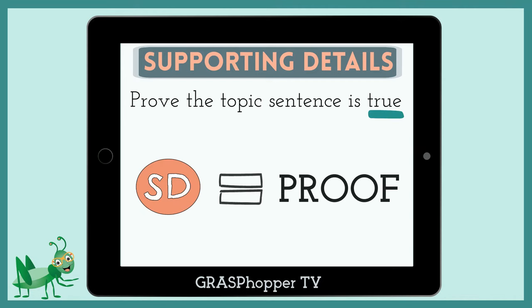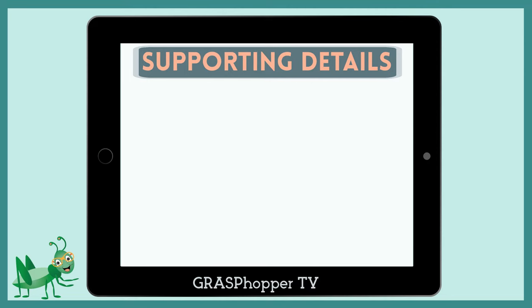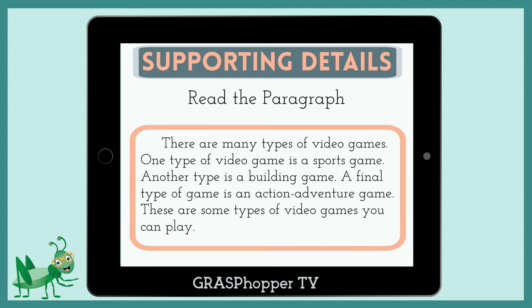Now let's learn some steps we can take to find these details in paragraphs. First, we read the paragraph. There are many types of video games. One type of video game is a sports game. Another type is a building game. A final type of game is an action-adventure game. These are some types of video games you can play.